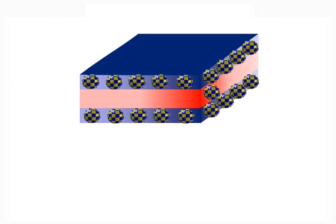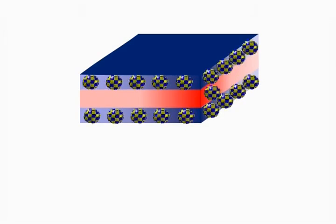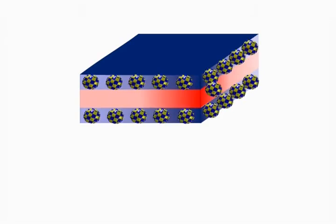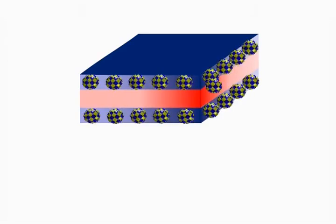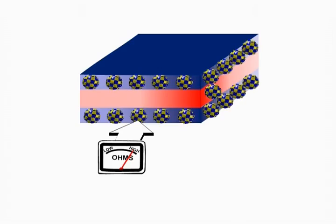In this state, the electrons spin in opposite directions in the top and bottom layers, which causes the electrons in the middle to scatter, increasing resistance.